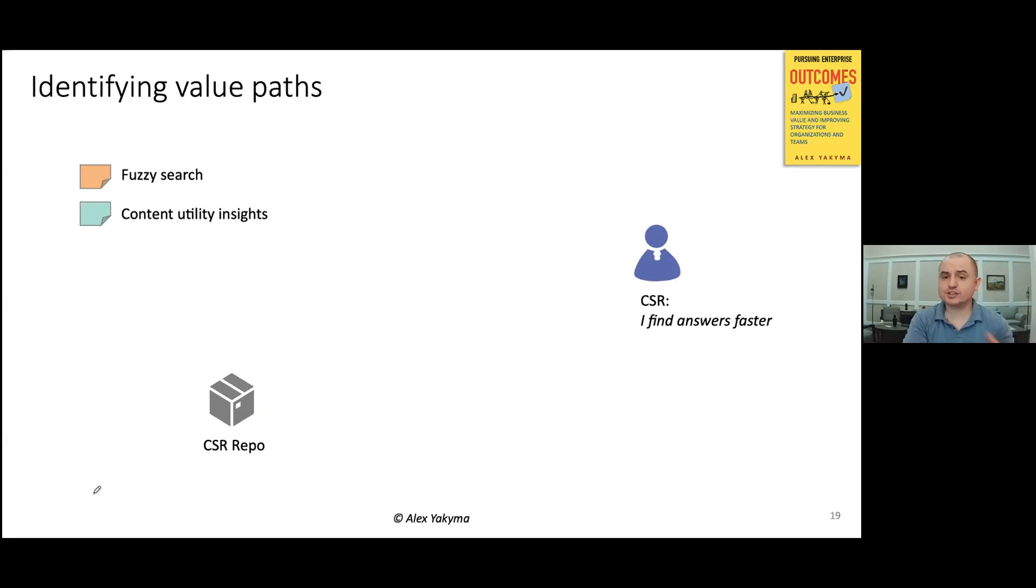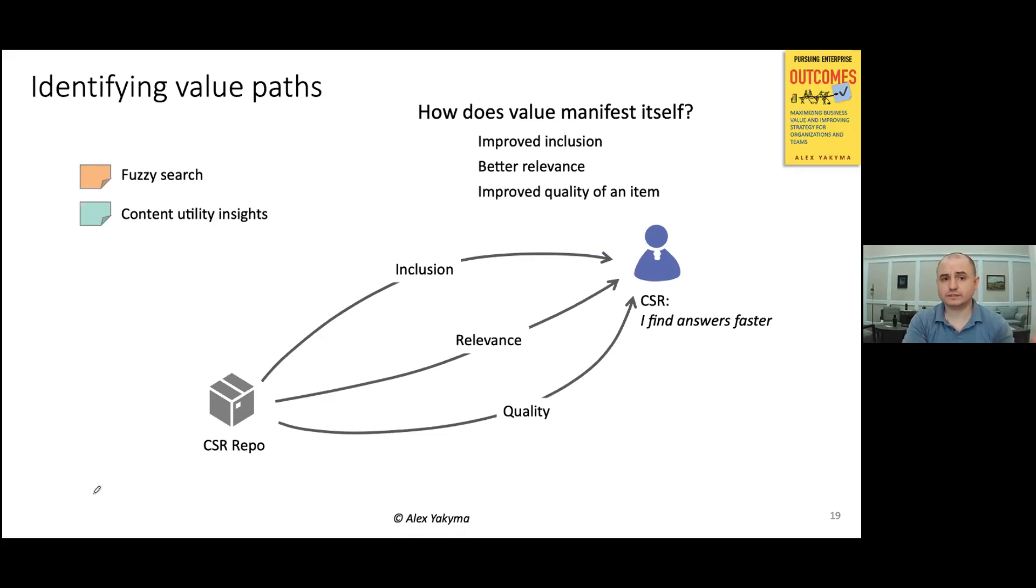Maybe the product team will get together and they will start discussing these two features. And they will figure out that the decision-making framework would contain a couple of key value paths by simply asking, so, how does value manifest itself in this case? And one of the things that would come up with in that particular example is, well, this functionality is supposed to improve the inclusion of search results that may otherwise not be included. Also, this is the first value path that they identified. The second one is better relevance of search results. And that's the second value path. And the third one is better quality of the results returned to the customer, those articles from the CSR repository. Notice that these value paths are highly contextual. These matter to this particular team, to this particular product, but another company, another product, maybe even in the same company, you would have a completely different structure of value paths.